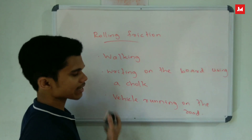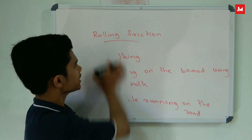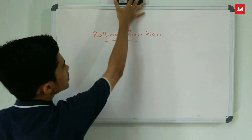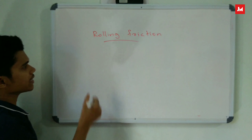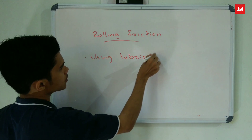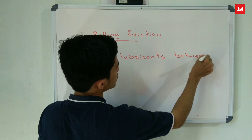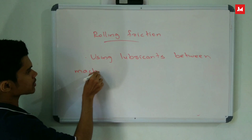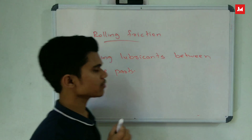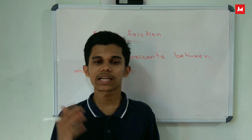A lot of examples come from factory machines. Using lubricants between machine parts reduces friction. That's why the friction is reduced in machines by using lubricants.